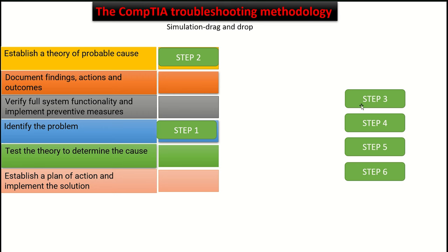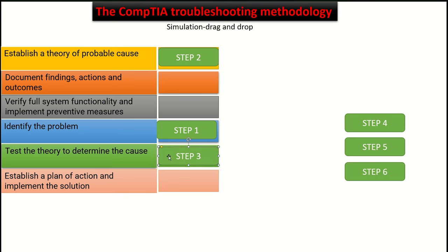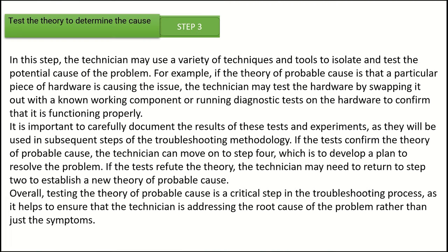Let's go to the third step. After you have established a theory of probable cause, what are you going to do next? Step three is to test the theory to determine the cause, because you have already established something in mind about what the issue might be, so you need to test that theory.